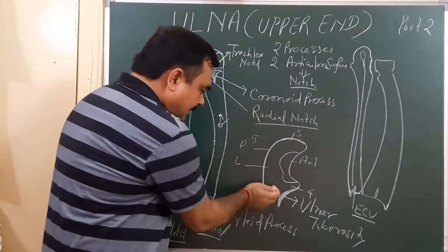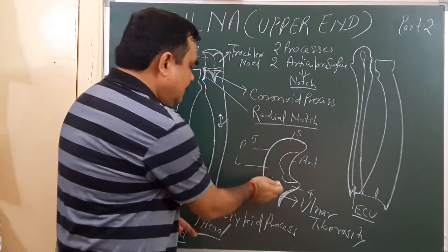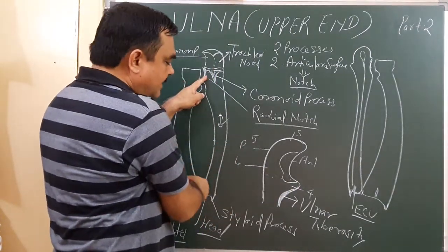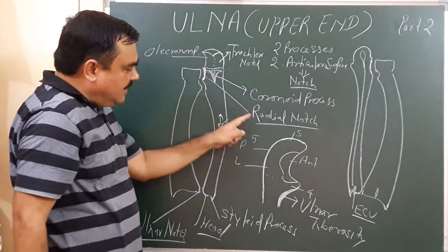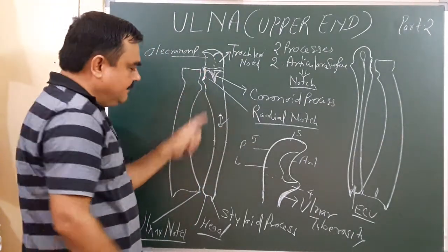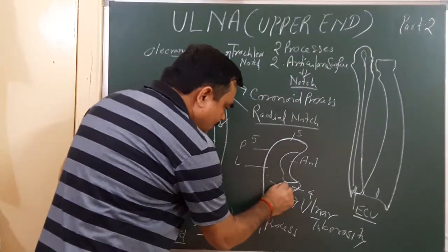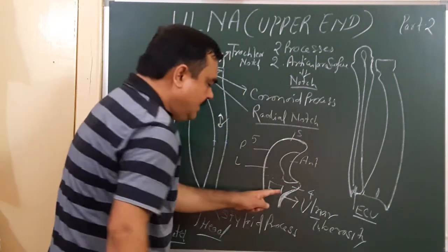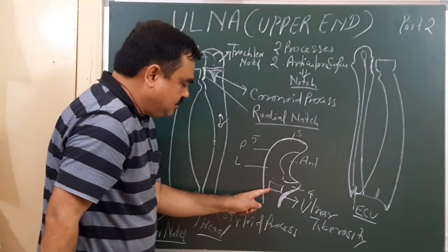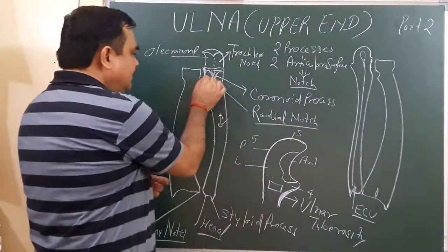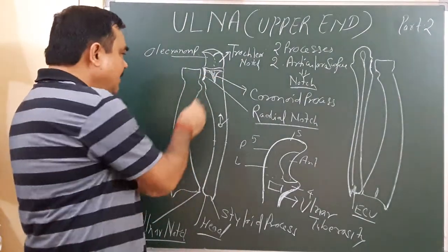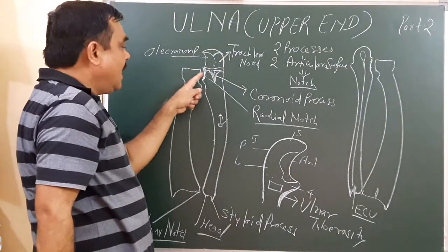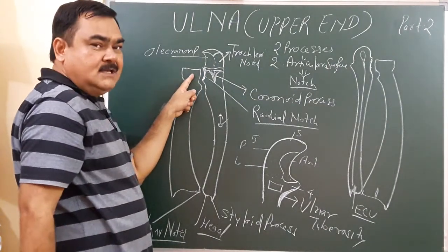The coronoid process has a lateral surface on the lateral side. This lateral surface has a radial notch. The radial notch has an anterior margin and a posterior margin. This radial notch accommodates and articulates with the head of the radius.